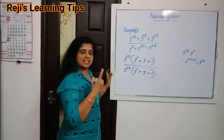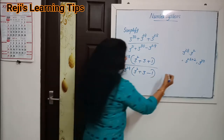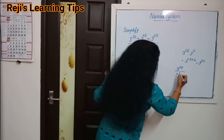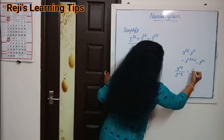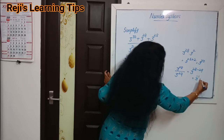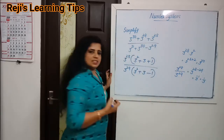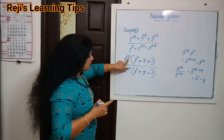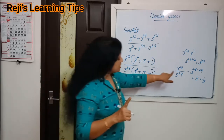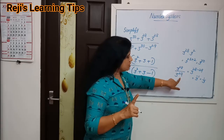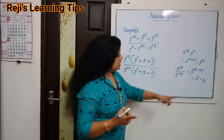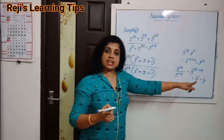After taking 3 raise to 29 outside in the denominator, 3 raise to 28 and 3 raise to 29 cancel. That is equal to 3 raise to minus 1, which equals 1 by 3. Because 3 raise to 28 divided by 3 raise to 29 gives 3 raise to 28 minus 29, which is 3 raise to minus 1, that is 1 by 3.